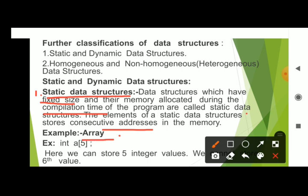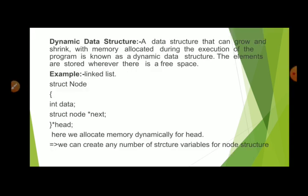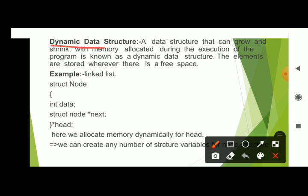The example of a static data structure is an array. In an array, elements are stored continuously in consecutive memory addresses.